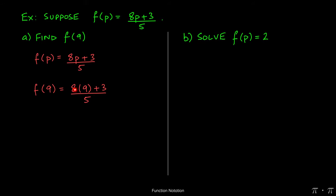At this stage we recognize that 8 times 9 is 72, so that expression simplifies to 72 plus 3 all over 5. Then 72 plus 3 in the numerator simplifies to 75, and 75 divided by 5 reduces to 15.